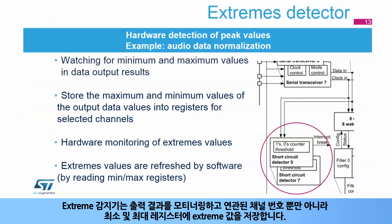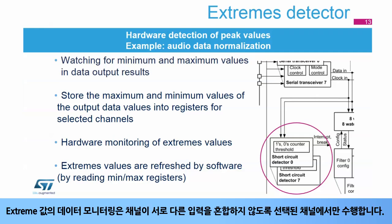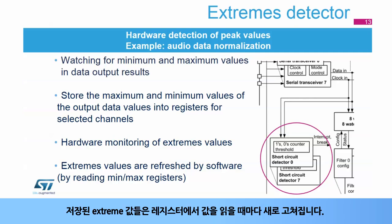The extremes detector monitors output results and stores extreme values into minimum and maximum registers, as well as the associated channel number. Monitoring of data for extremes is only performed on selected channels to ensure channels do not mix different input levels. Stored extreme values are refreshed each time the values are read in the register.